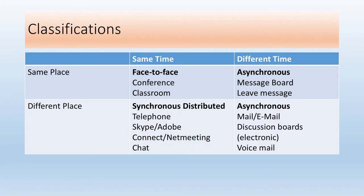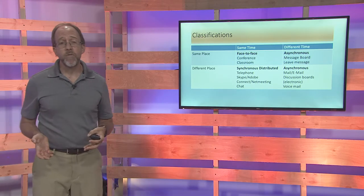How does this classify? If users are together — at the same place at the same time — you may literally be sitting in the same room all using a system together, and there are groupware systems to support that. For example, a PowerPoint presentation in a classroom is a form of groupware used to control the meeting of students. Moving to same place but different time shifts the temporal aspect into asynchronous communication.